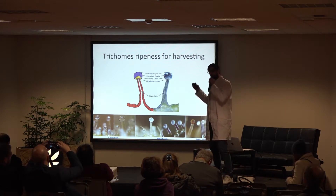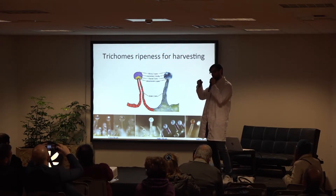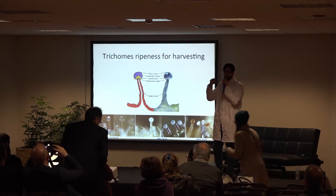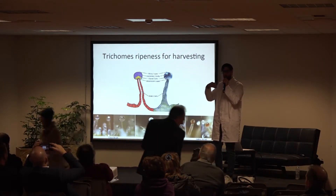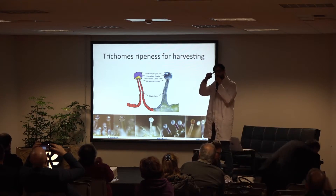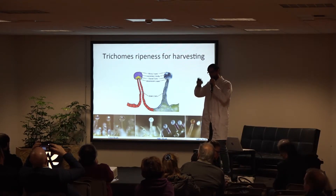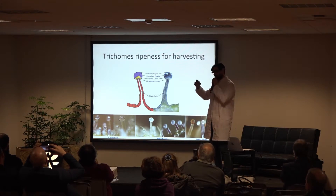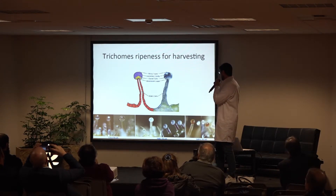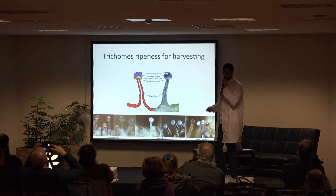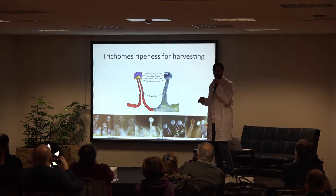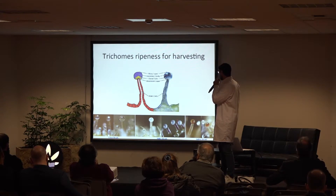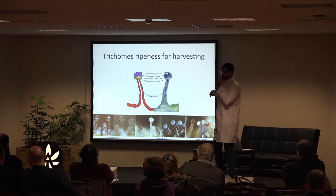To get to CBD or THC, you have to first go through CBG. There is a chain of production of primary cannabinoids that transforms as the plant matures into THC — our main interest — or CBD or other cannabinoids. The cannabinoids will be fully matured at the amber stage.